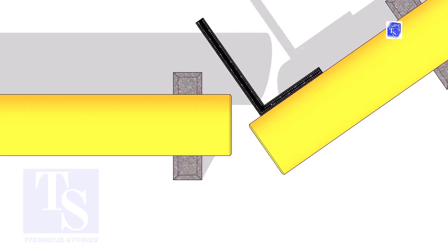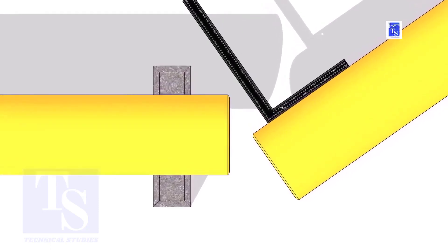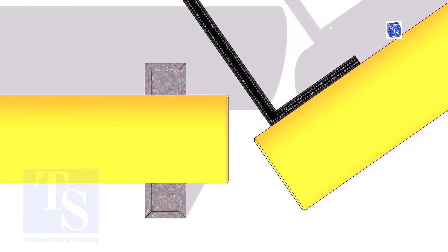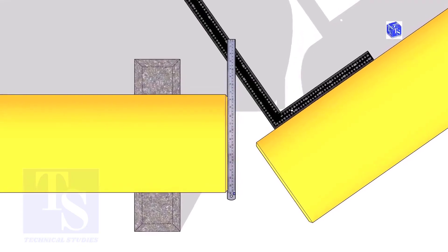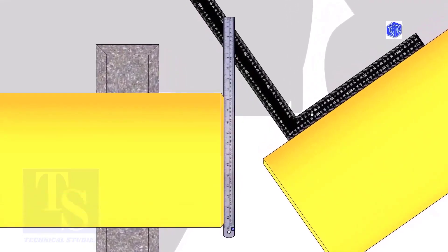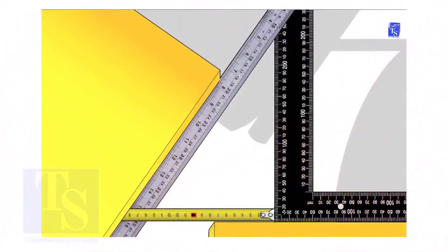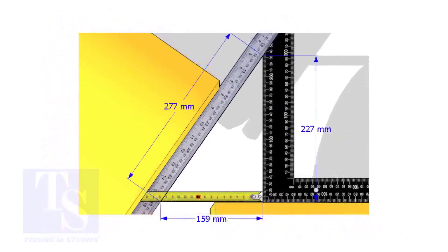Hold a right angle on the pipe as shown. Hold a scale on the other pipe as shown. Measure and note down the dimensions of the triangle. Assume that these are the dimensions.